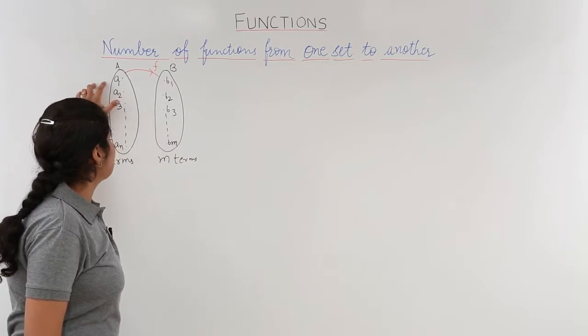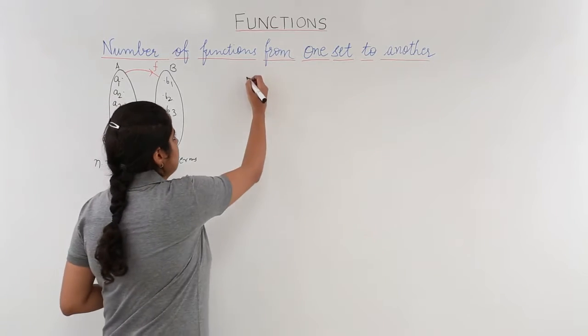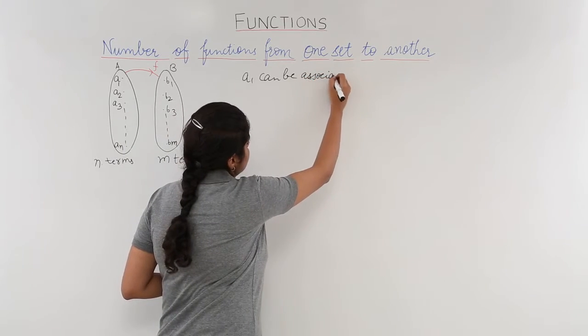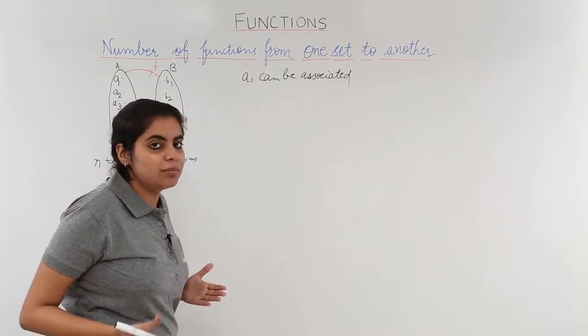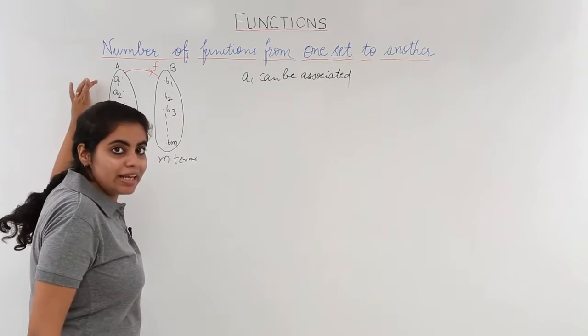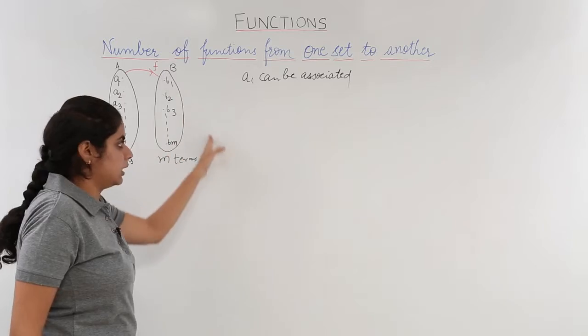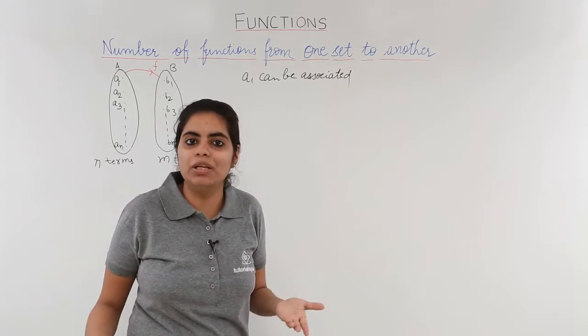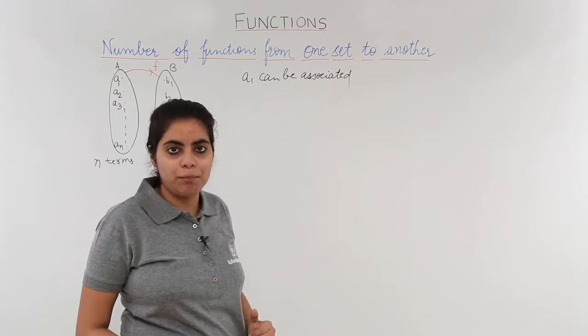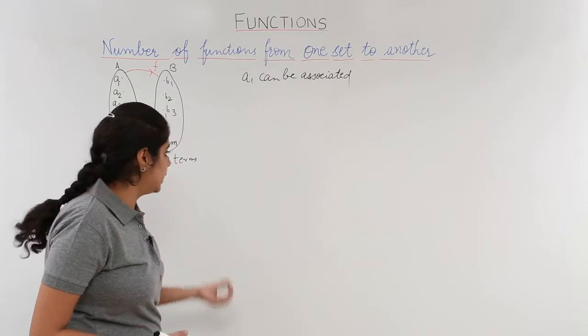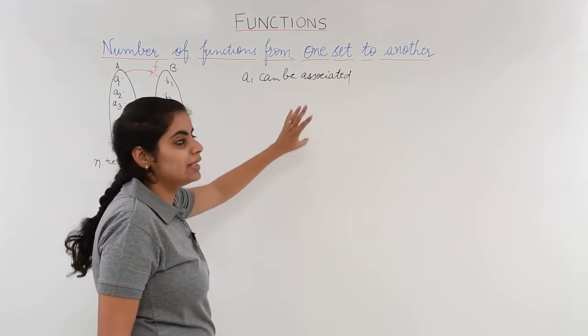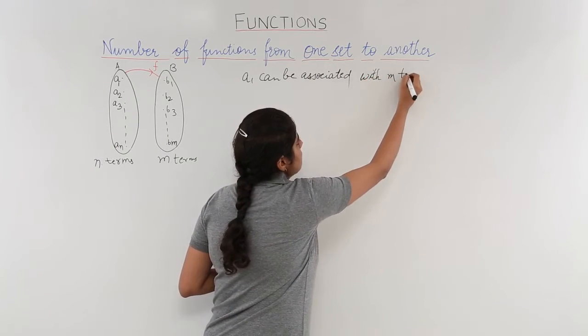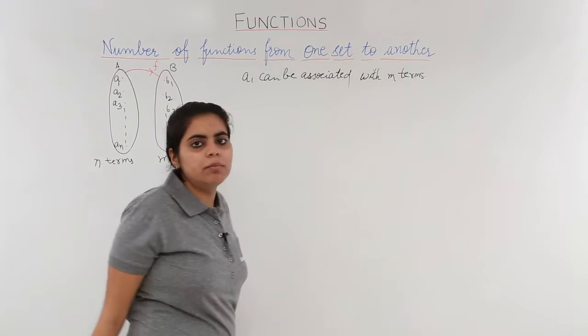Now talking about the first element A1, A1 can be associated with how many elements? Any mapping can be done. A1 can be associated with B1 or B2 or B3 and so on till BM. So A1 can be associated with M terms. Any of the M terms would do.